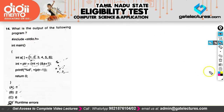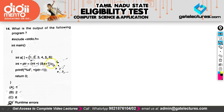Here we have a C language question asking for the output of a program. Pointer arithmetic is used and you have to be very careful with pointer questions in C — they are an important part and most questions come from this topic. The program initializes an array with six elements: 1, 2, 3, 4, 5, 6.